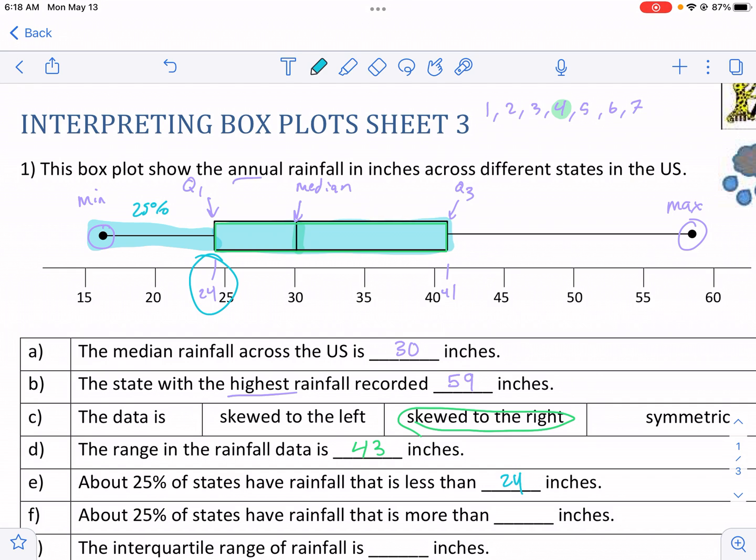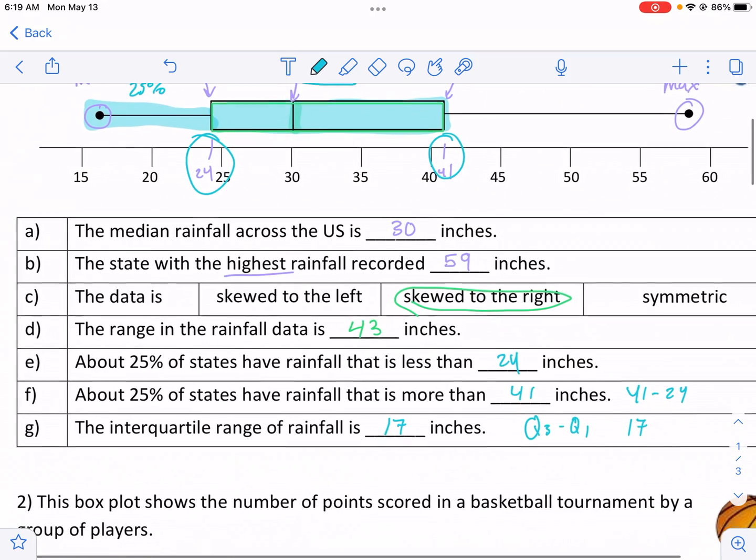About 25% of states have rainfall that is more than, this is going to be our Q3. You're probably wondering, why did I go from Q1 to Q3? It's because our Q2 is what we call our median. So this is 41 inches. 25% of states get more than 41 inches. And the interquartile range of rainfall, so we talked about range, max minus min. Interquartile range is Q3 minus Q1. So Q3 minus Q1 is just 41 minus 24, and I think that's 17, right? 41 minus 24, and that's going to be 17 inches. All right, I think that's the last question.